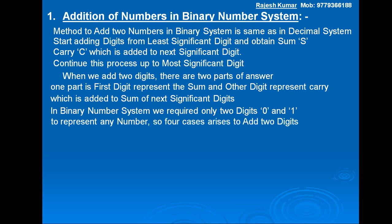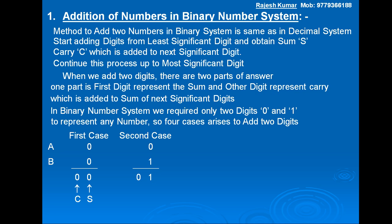Four cases arise to add two digits in binary system. For digit A and digit B: First case — A is 0, B is 0, their sum is 00, meaning sum S is 0 and carry C is 0. Second case — A is 0, B is 1, their sum is 01, meaning sum S is 1 and carry C is 0.